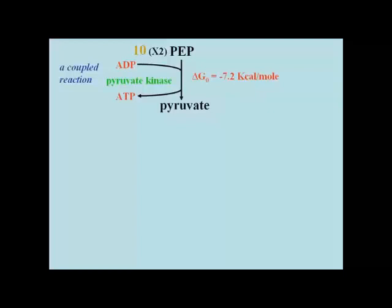Like 1,3-diphosphoglycerate, phosphoenolpyruvate (PEP) is also a very high energy phosphate compound. In this quite exergonic reaction, ΔG₀ = -7.2 kcal/mole, the hydrolysis of phosphoenolpyruvate is coupled to the synthesis of another molecule of ATP. The enzyme catalyzing this reaction is pyruvate kinase.